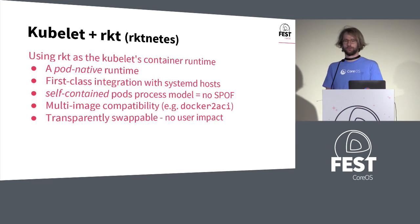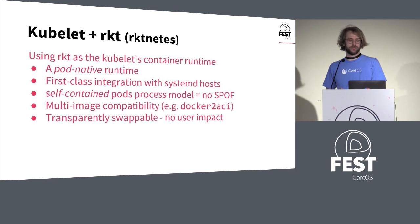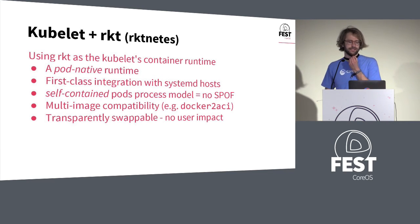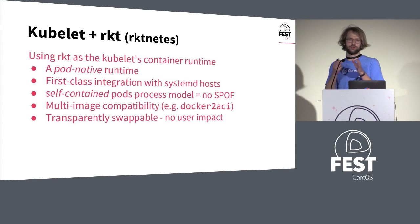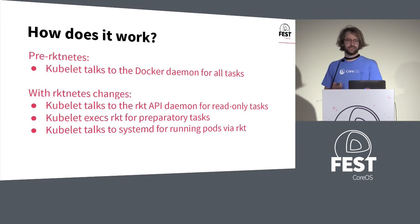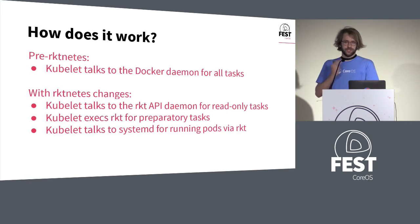That's part of the reason guiding us to work on Rocket + Kubernetes, and we think it provides solutions to those drawbacks. Rocket is pod-native, so the kubelet can talk at the pod level to the runtime. There's first-class integration with systemd — no real conflicts over who's managing what. Since pods are self-contained processes, there's no single point of failure for all the pods or containers. We also get other advantages like different compatibility: if Rocket supports multiple image formats like the Docker image format or the OCI image format, you get all that now in Kubernetes. And since it's transparently swappable — both within Kubernetes and within the stage one in Rocket itself — we can swap out different technologies without impacting users at all.